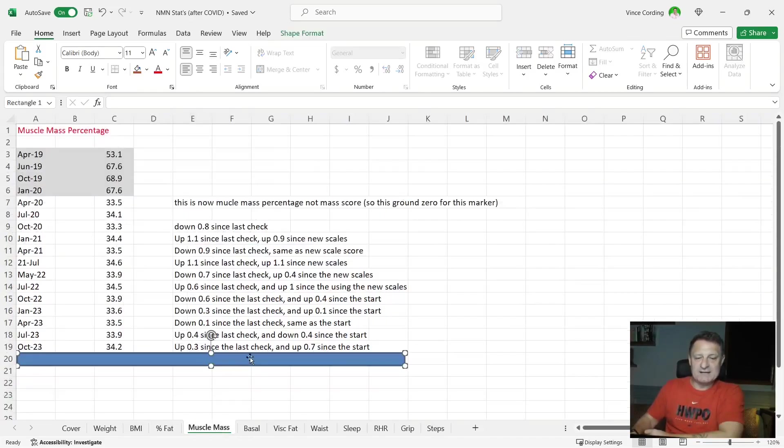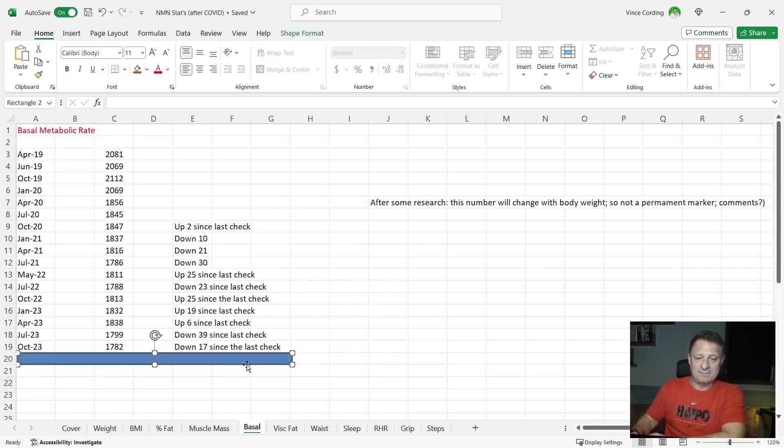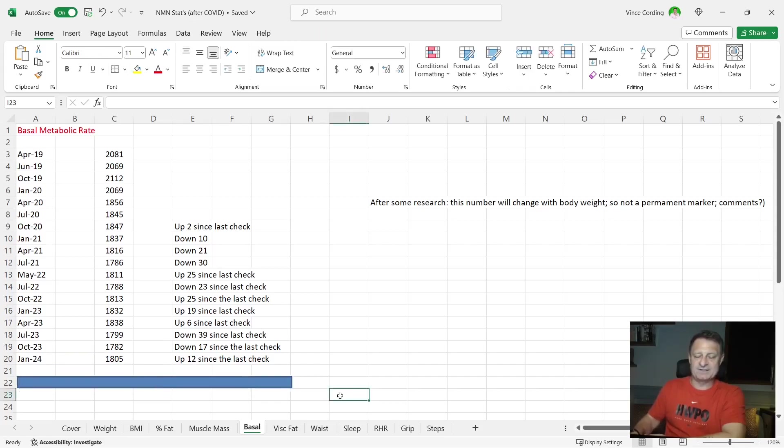Moving on to muscle mass, you can see here that it's now 34.3. That's down 0.1 since the last check, and it's up 0.8 since the start. So not fantastic. I'd like to be putting on more muscle. It's important we do that as we age, but as long as I'm not losing a vast amount of muscle and heading towards sarcopenia territory, I'm very happy. My basal metabolic rate was 17.82. It's now 18.05, so up 12 since the last check. That's to be expected because I have increased in weight slightly.